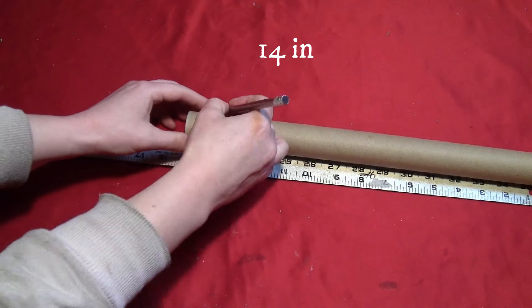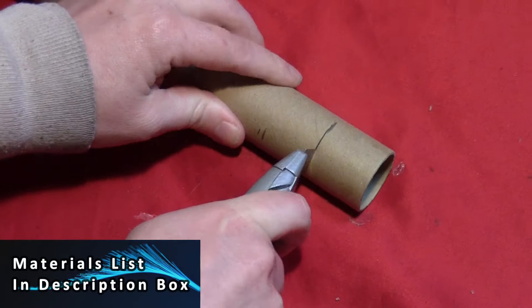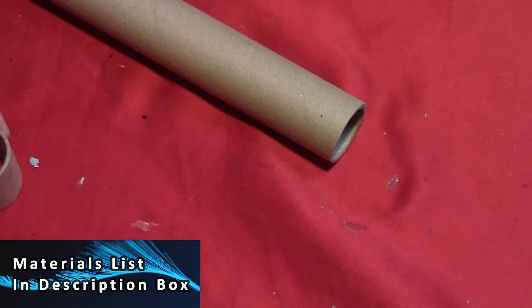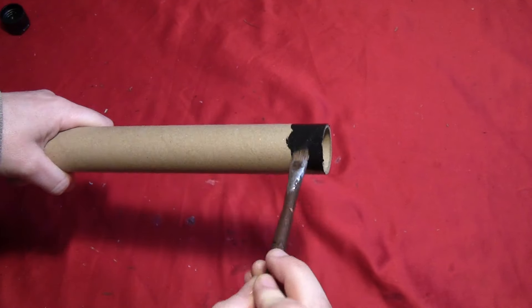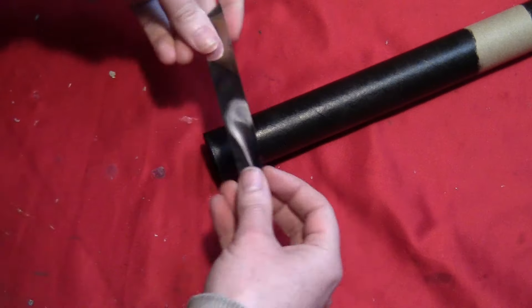Start by getting yourself a cardboard tube. I cut mine down to 14 inches, just using a utility knife to cut off the end there. Then you want to paint most of it black. I left a few spaces so I can grab my fingers and they'll be covered up with foil anyway.